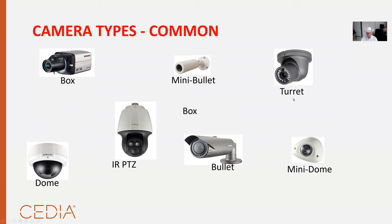Cameras are improving all around but the standard types are still common. The box camera gives really good performance and great lenses. Small indoor cameras include mini bullets, turrets, and mini domes. The dome is standard. Bullets do a little better with IR outside than domes — it's just the way the LEDs are placed within the structure. IR is getting into PTZs, which was very uncommon a few years ago. We're looking at a couple hundred meters — about 600 feet — which is pretty good for those cameras.